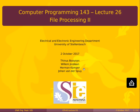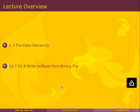We are still in Chapter 11 of file processing, but now we're going to look at binary files. Binary files are really nice, but one part is you can't read them as easily as text files. The benefit is that information is stored much more efficiently in a binary file — you can't read it directly as a human, but you can write code to read it and print out its content. This leads us to what we call the data hierarchy.